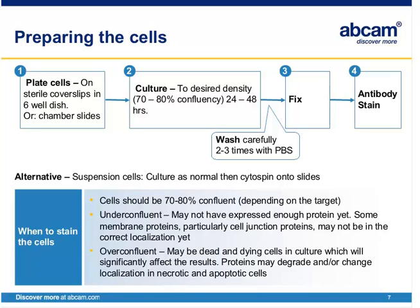When do you know when your cells are ready to stain? Although we say cells should be about 70 to 80% confluent, this very much depends on the target. Some cells need to be really very confluent before they start expressing the protein in the correct localization, so this may need to be optimized. If your cells are under-confluent, they may not have expressed enough protein yet — for example, some membrane proteins and cell junction proteins may not be expressed in the correct localization. If cells are over-confluent, you may have dead and dying cells, which could affect your results, and proteins can degrade and change localization in apoptotic cells.